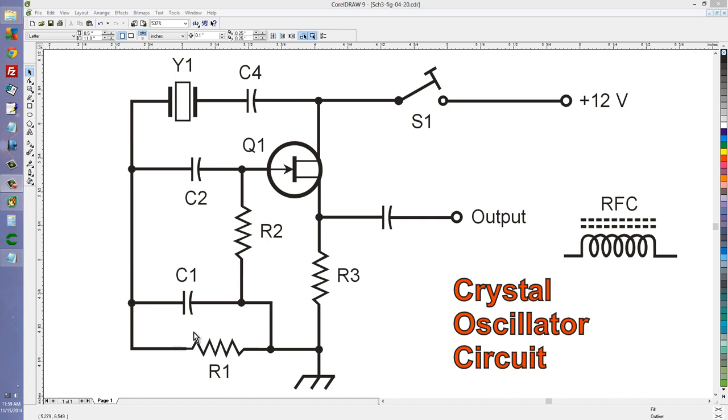That feedback goes through the rest of this circuit and keeps that thing oscillating as long as this telegraph key, S1, is closed so that 12 volts will be supplied to the circuit.